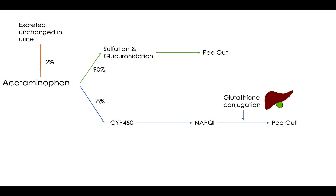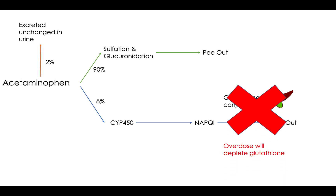So what happens when you overdose? Both the excretion unchanged and sulfonization and glucuronidation will still happen, but they're going to get overwhelmed with the amount somebody takes when they overdose on acetaminophen. So it all goes through the CYP450 system, and eventually your liver is going to get overwhelmed. That overdose will deplete the glutathione in your liver, so you can't get rid of that NAPQI and it starts building up. NAPQI is hepatotoxic, causing irreversible cell damage.